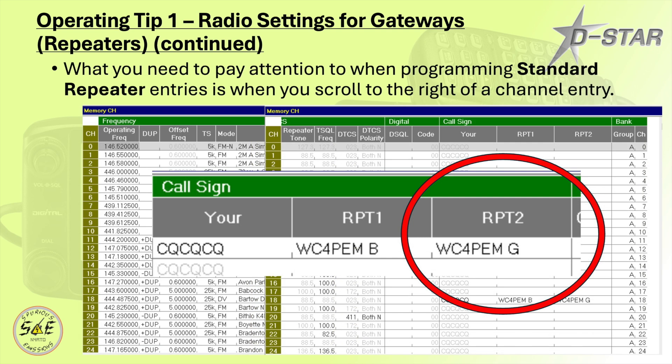When we go back and look at the standard memory channels, the most important entries are the RPT1 and RPT2 fields. RPT1 is the local port and the repeater that you're getting into. RPT2 is where you would set whether you're operating locally or operating through the repeater's gateway. RPT2 is going to be one of the most important settings you're going to make.